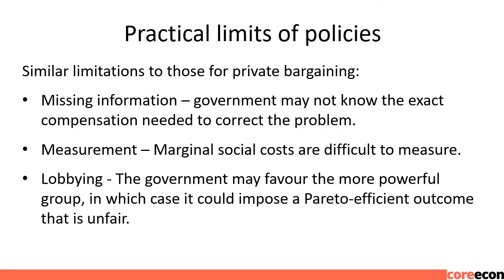Practical limits of government policies are similar to those for private bargaining: missing information — the government may not know the exact compensation needed to correct the problem; measurement — marginal social costs are difficult to measure; and lobbying — the government may favor the more powerful group, in which case it could impose a Pareto-efficient outcome that is unfair.